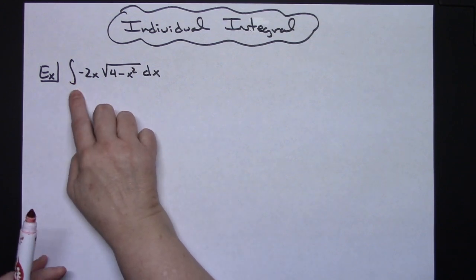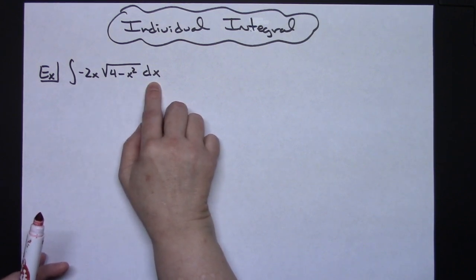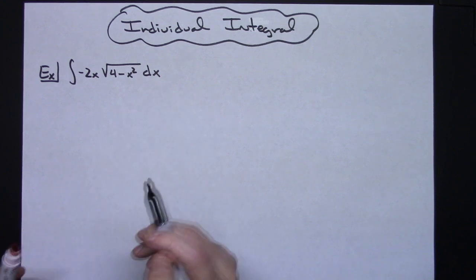So we're going to take a look at the integral of negative 2x square root of 4 minus x squared dx. If I'm wanting to attempt a u substitution on this type of integral...